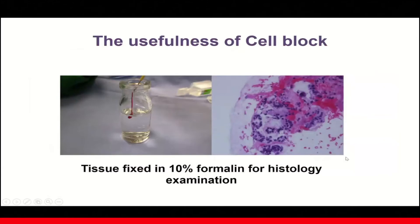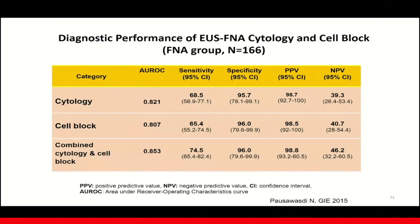Besides cytology, the tissue should be prepared for histology using cell blocks. In my practice, I fix the tissue in formalin and later paraffin embed it. This technique provides histological examination and ancillary studies. We have demonstrated that the combination of histology and cytology assessment provides better diagnostic yield compared to either one alone — the sensitivity improved from 68 to 74, remaining high at 96, with the AUROC improved from 0.80 to 0.85. Therefore, the combination of histology and cytology is recommended for tissue processing.